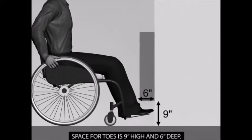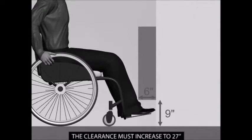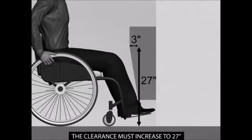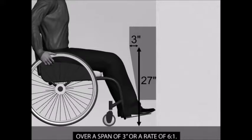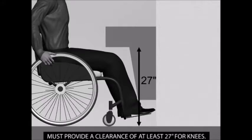Space for toes is nine inches high and six inches deep. The clearance must increase to 27 inches over a span of three inches or a rate of six to one. The remainder of the space to the leading edge must provide a clearance of at least 27 inches for knees.